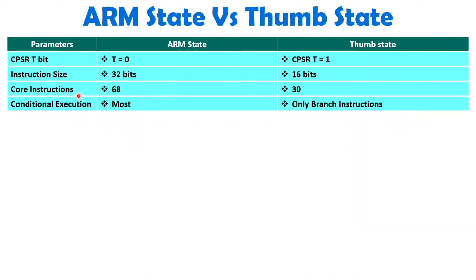In terms of programming, ARM state programming will be more efficient compared to Thumb state. However, since ARM state instructions are 32 bits, code density will be better in Thumb state compared to ARM state.